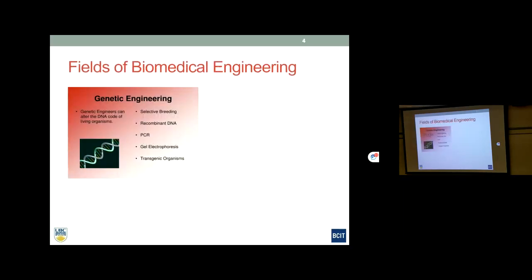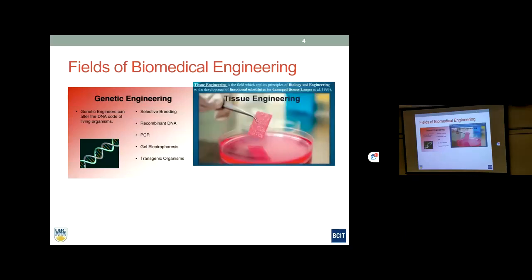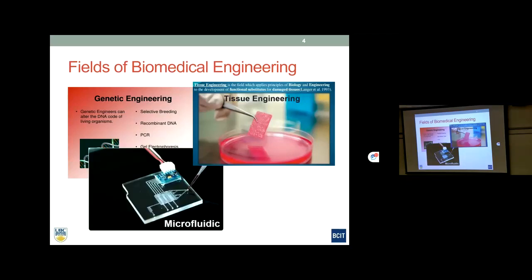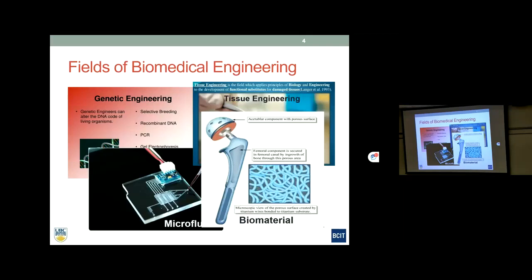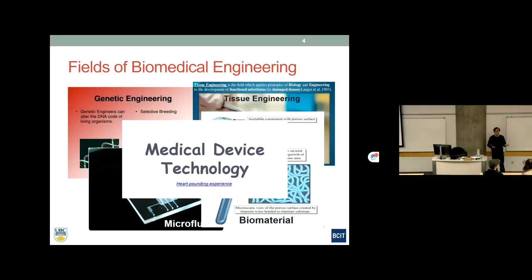The field of biomedical engineering is very broad. It can include genetic engineering, tissue engineering — even growing a heart in a lab. It includes microfluidics, using very small fluid systems to do amazing things like point-of-care devices where a small device can measure all your blood gases and blood chemistry. And of course there is biomaterials — different types of implants and tissues. For myself, I am in medical device technology.